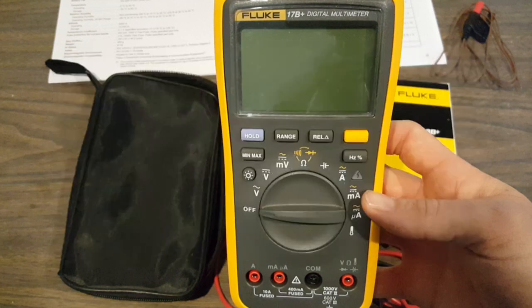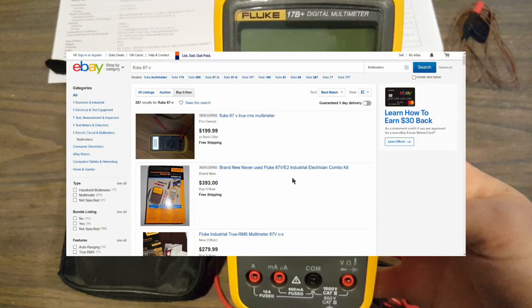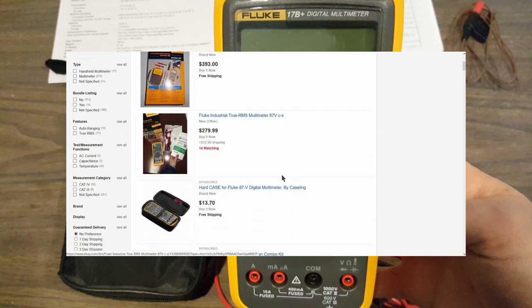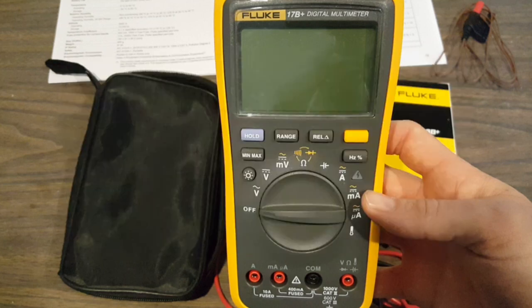This is quite a bit cheaper than the one that's commonly referenced, the Fluke 87V, or wait a minute, is that 87V or 5, or I don't know. Anyway, the common Fluke 87, I'm going to go with V. It retails for around $400. Here are some results on eBay, as you see, for comparison.